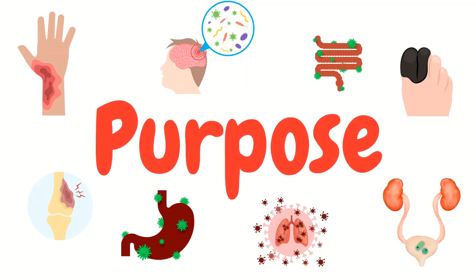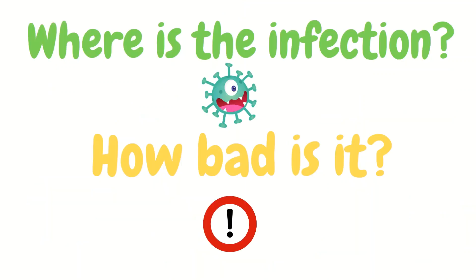Sepsis is characterized by an infection and the body's unregulated reaction to that infection. What makes sepsis deadly is it can eventually lead to multi-organ dysfunction and death. The purpose of the sepsis workup is to locate the infection and figure out how sick the patient is — for example, whether the patient is already in organ dysfunction or still early in the process.